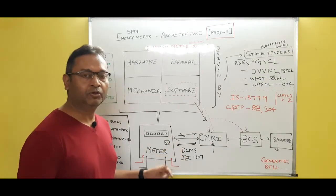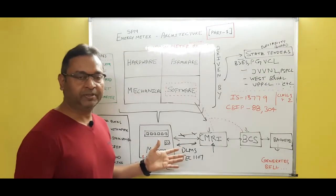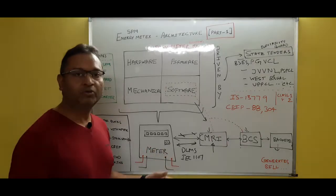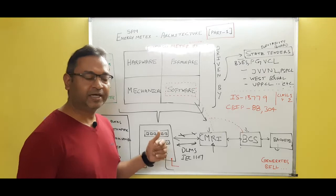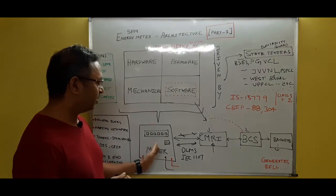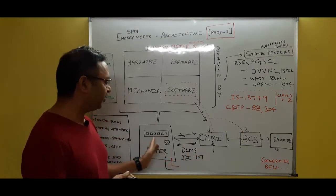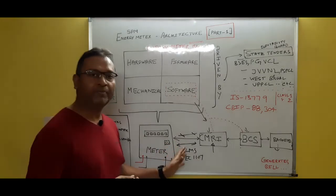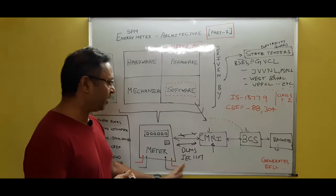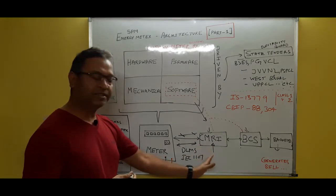So here your meter reader or the meter supervisor guys monthly come with the CMRI equipment. CMRI stands for Common Meter Reader Instrument, and this instrument talks to your meter through optical port or through IR communication or through IRDA communication, or maybe some through wired communication. So these are the physical channels to communicate the CMRI equipment with the meter.